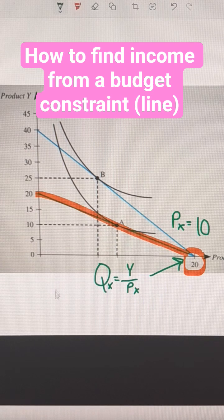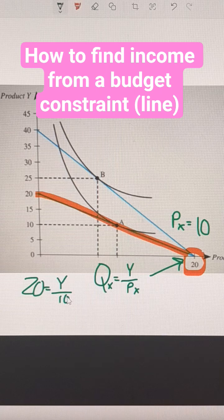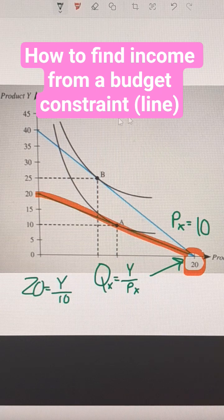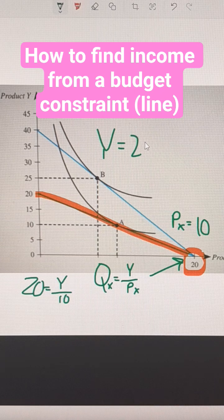We'll fill in what we know. They can buy 20 units, and we don't know Y—that's what we're solving for—but we know the price of X is 10. Solving this equation, 20 = Y/10, we get that Y, the total budget facing this consumer, is 200.